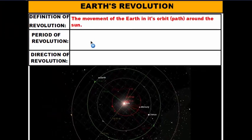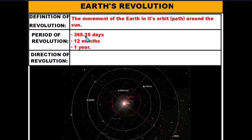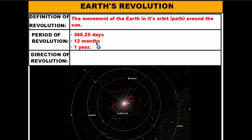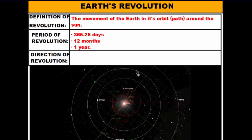Our period of revolution is the block of time it takes the Earth to go around the Sun. It takes us 365 and a quarter days, or 12 months, or one year to complete one revolution. You can think of it like New Year's — whenever you celebrate it, you're celebrating a safe trip around the Sun and the beginning of a new one.